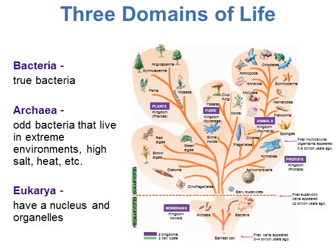Now we'll look at the three domains — the largest group in our levels of classification. The first is the domain bacteria, which are the true bacteria. The second domain is archaea — these are odd bacteria that live in really extreme environments, such as high salt concentration, high heat, or environments with no oxygen, like methane swamps. Both bacteria and archaea have prokaryotic cells — very simple cells that lack a nucleus.